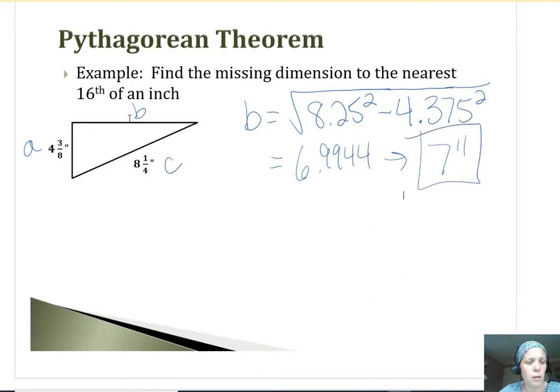And kind of make sure it makes sense. This, if this was to scale, 7 looks reasonable. 8 and 1/4, that's the hypotenuse, so it definitely should be the longest. So 7 is less than 8 and 1/4, so it should be good.